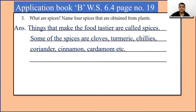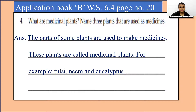Now we will move to question 4: What are medicinal plants? Name 3 plants that are used as medicines. The parts of some plants are used to make medicines — these plants are called medicinal plants. For example, tulsi, neem and eucalyptus. Okay children, these are the 3 plants that are used as medicines.